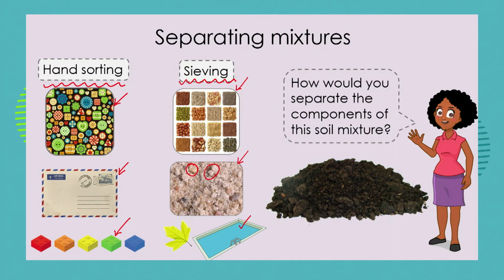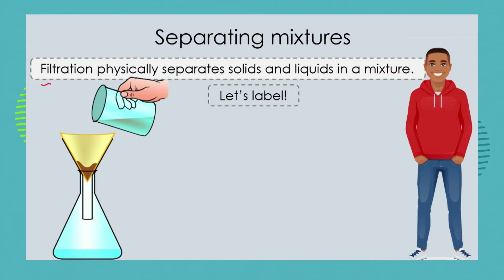But sieving is not going to work when the particles of our mixture are extremely small. So how could we separate the components of this soil mixture? The particles in the soil mixture are much smaller than the particles in the sand mixture, so we need to think of another separation process — and that process is filtration.